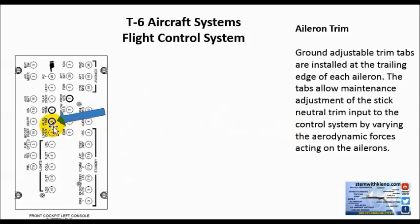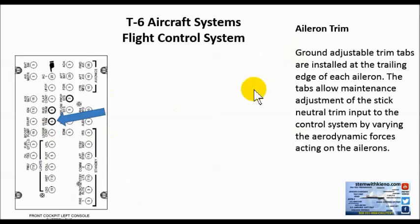Grounded adjustable trim tabs are installed at the trailing edge of each aileron. The tab allows maintenance adjustment of the stick neutral trim position by varying aerodynamic forces acting on the aileron. The ground crew or maintenance crew can make slight adjustments — if you come back and say the aircraft was flying left wing down or right wing down, you give them that indication and they can make adjustments.